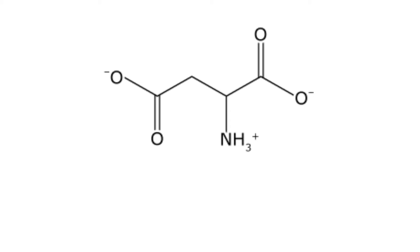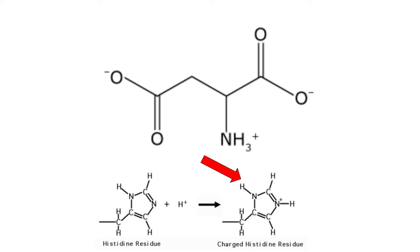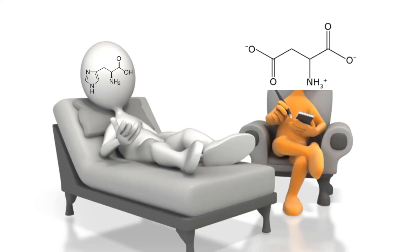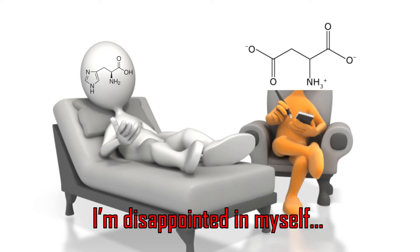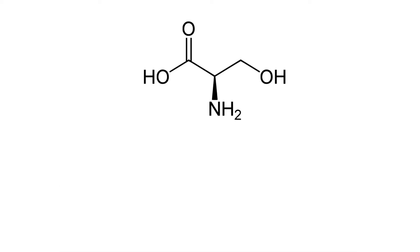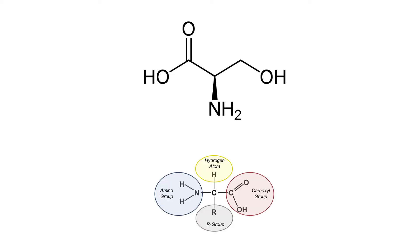Aspartate, which is negatively charged, stabilizes the positively charged histidine — he's like histidine's therapist, telling him to stop overreacting. Serine, which acts as a nucleophile as we already talked about, is a reactive species that attacks the carbonyl group of the polypeptide substrate, attacks that carbon, and through covalent catalysis, it makes a bond. And then we have our catalytic triad.